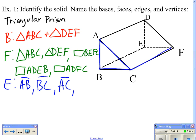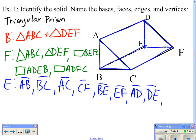Additionally, segments CF, BE, and segment EF, as well as segments AD, DB, and finally, segment DF. All of these are edges because these are all segments where the faces meet.